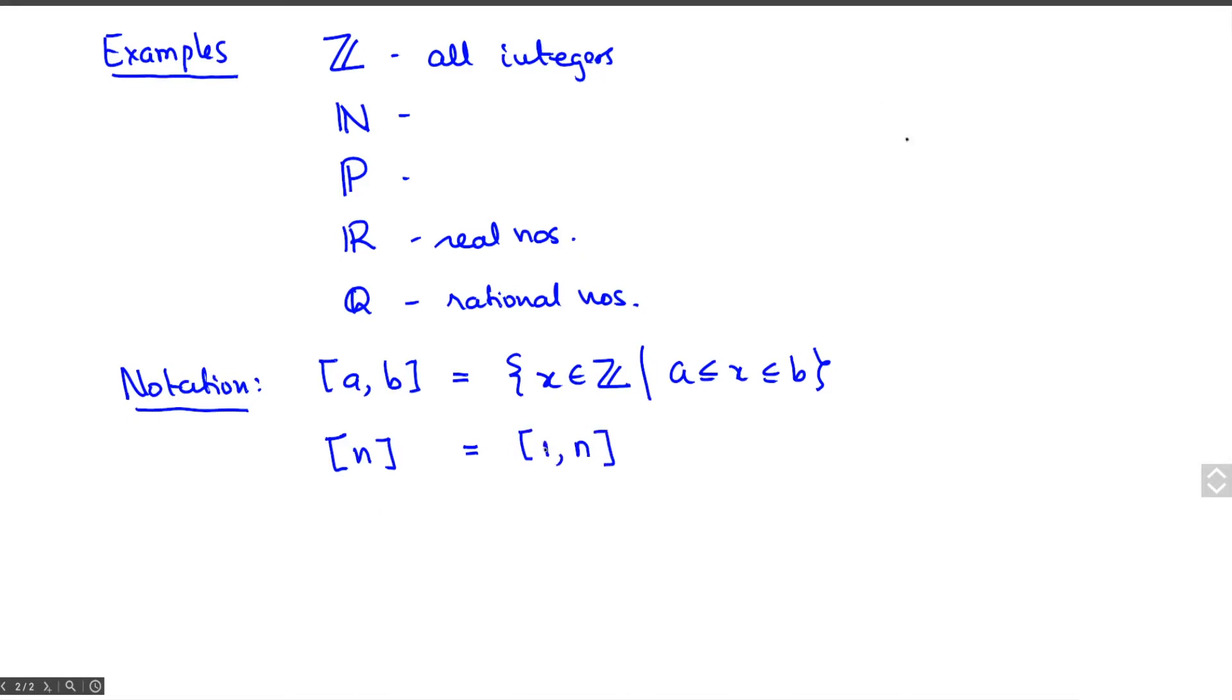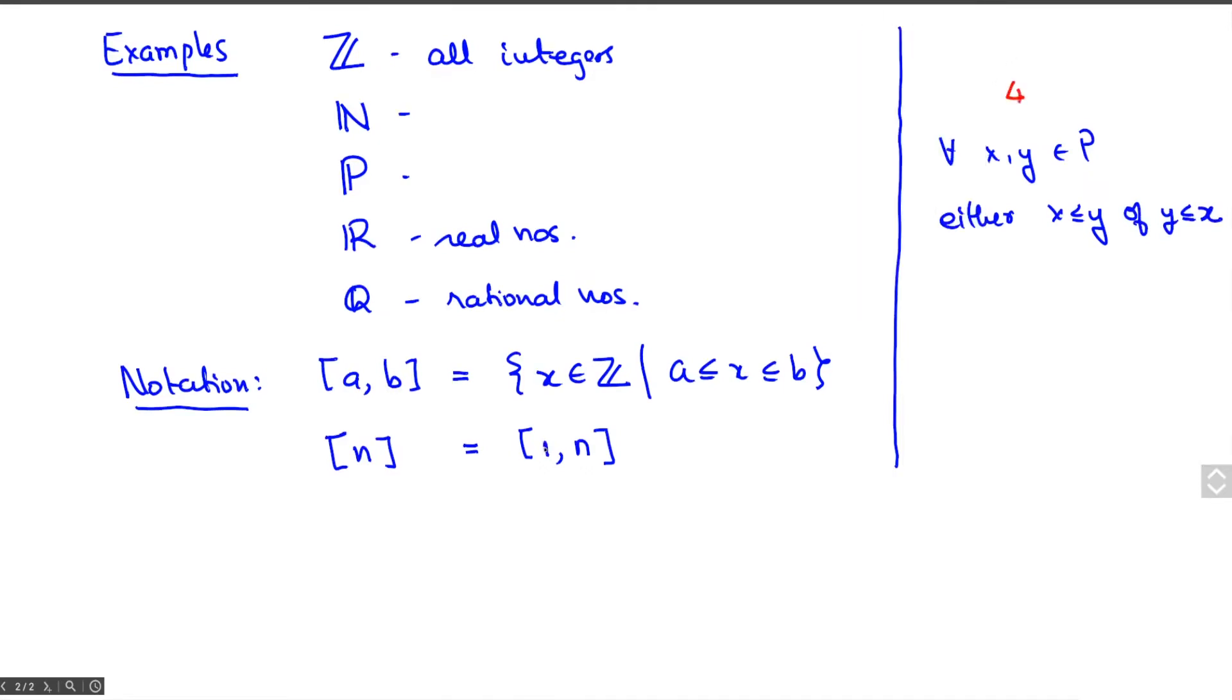These are all partial orders, but these satisfy an additional relation: that for all x, y in P, either x ≤ y or y ≤ x. Let's give this axiom a name—we'll call it axiom 4. But this is a special axiom which is not part of the definition of a partial order. A partial order that also satisfies 4 is called a total order or a chain.